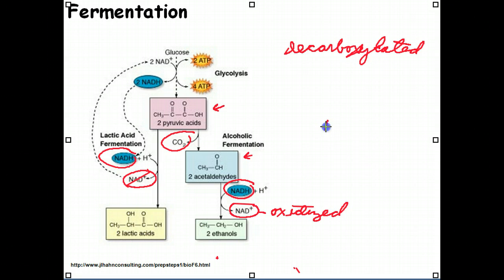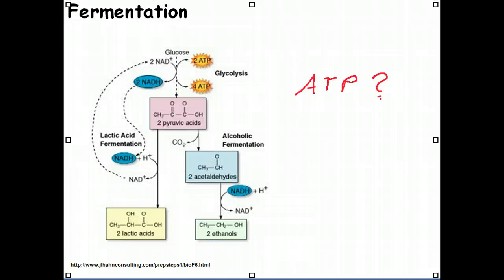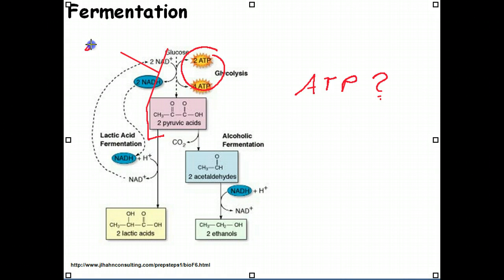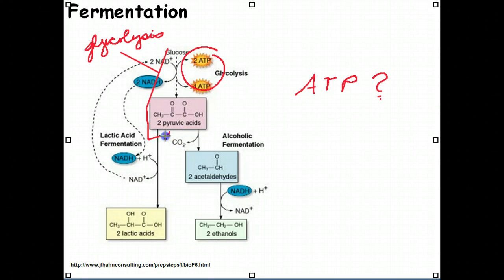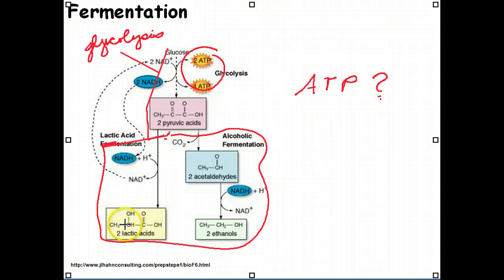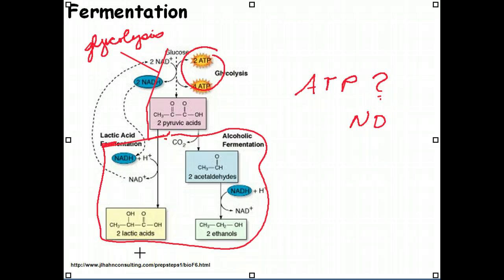Is there any ATP being made during fermentation? There is ATP made during glycolysis — that part. But from pyruvic acid onward, this is fermentation, and no ATP is being made during fermentation itself. The only ATP produced comes from glycolysis, and that's only two molecules of ATP. Compare that to cellular respiration where you make 36 to 38 molecules of ATP — so you're making a lot less.